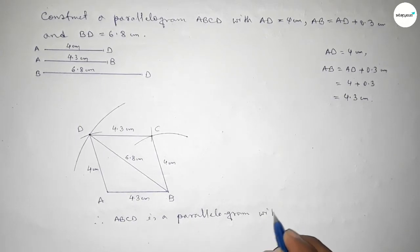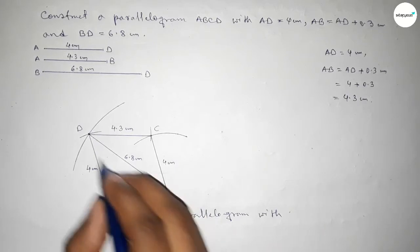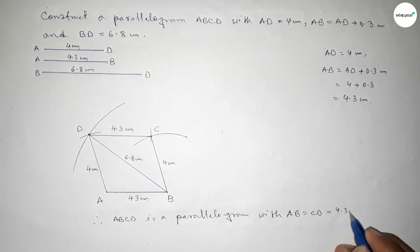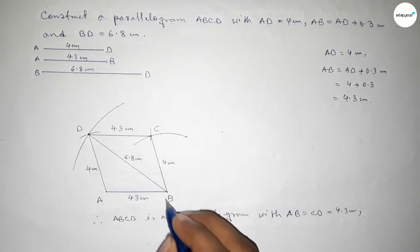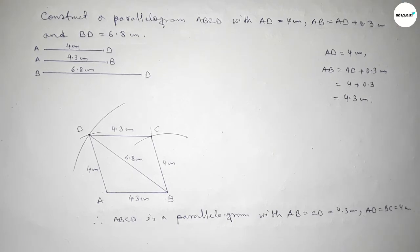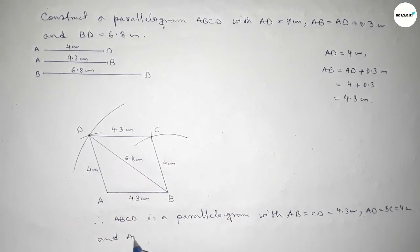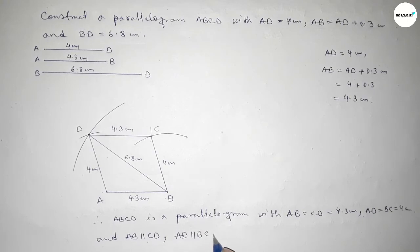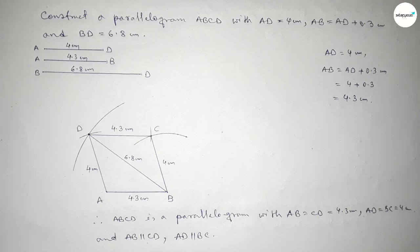Therefore ABCD is a parallelogram with AB = CD = 4.3 cm and AD = BC = 4 cm. That's all — thanks for watching. If this video is helpful to you, please share it with your friends.